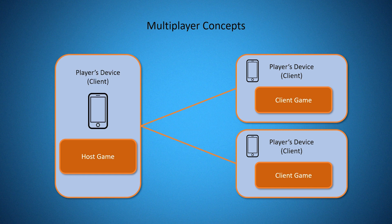The second type of architecture can be depicted by this slide here. In this slide, we replace the need for a dedicated device with another player's device. In this example, we have a player that starts a game and they become the host of that game, and then all other players connect to that game as clients. A note about this type of architecture is that you're no longer required to maintain a dedicated device, which can end up saving you some time and money.